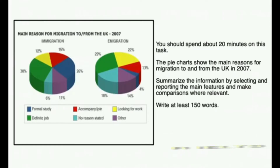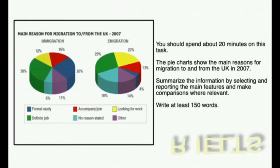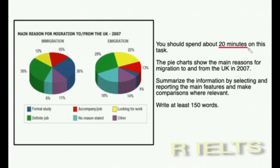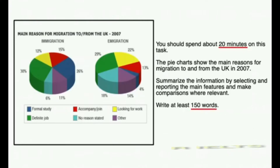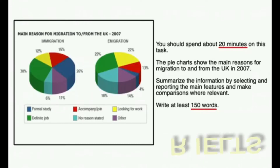Let's look at analysing this particular IELTS pie chart. Before you start writing your IELTS Task 1 you should spend a few minutes analysing what you're looking at and deciding how you will organise your answer. Remember you have 20 minutes to answer the question, which isn't much time, and you must write at least 150 words. The task will tell you what the pie chart is about — in this case it's comparing immigration and emigration. Immigration is entering a foreign country to live, while emigrating is the act of leaving a country to live in another country.